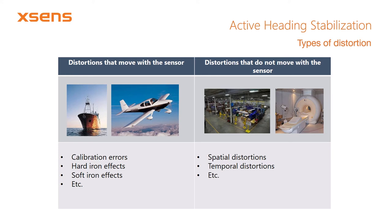There are various types of magnetic distortions. We distinguish between distortions that move with the sensor, such as when the sensor is fixed to a large ship or aircraft, and distortions that do not move with the sensor — for example, when navigating through a building with ferromagnetic objects or time-varying distortions. Although AHS is applicable to both types, we recommend using either our magnetic field mapping tool or our in-run compass calibration feature for fixed distortions. Distortions that cannot be compensated for by calibration methods may be addressed using the Active Heading Stabilization feature.